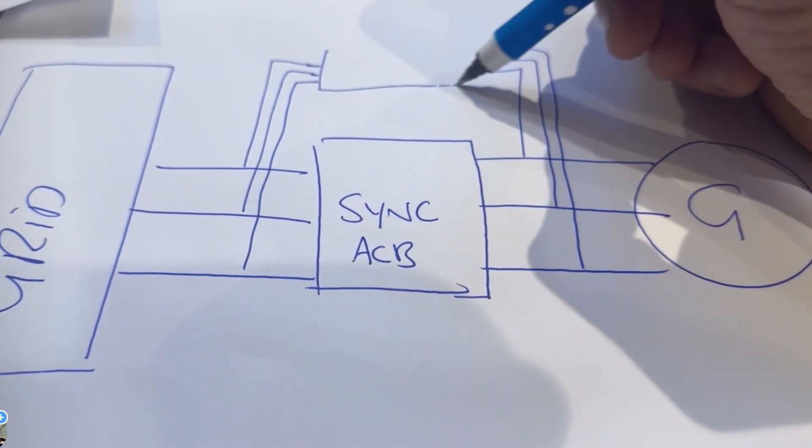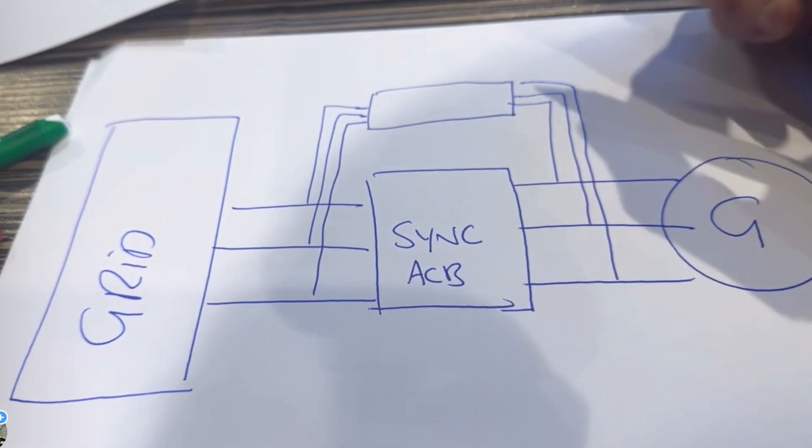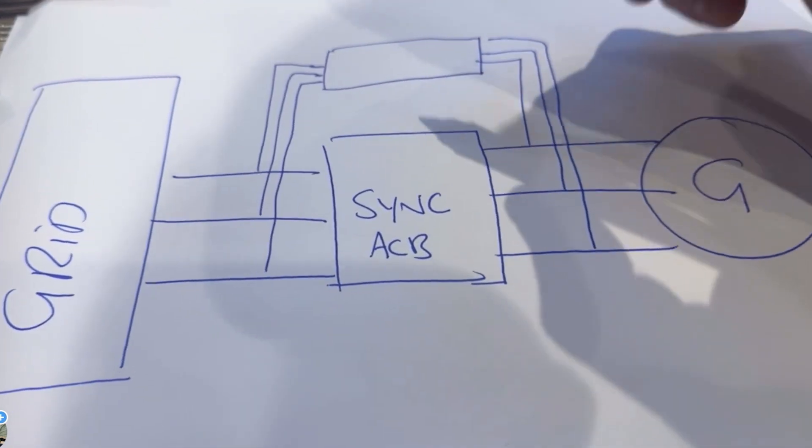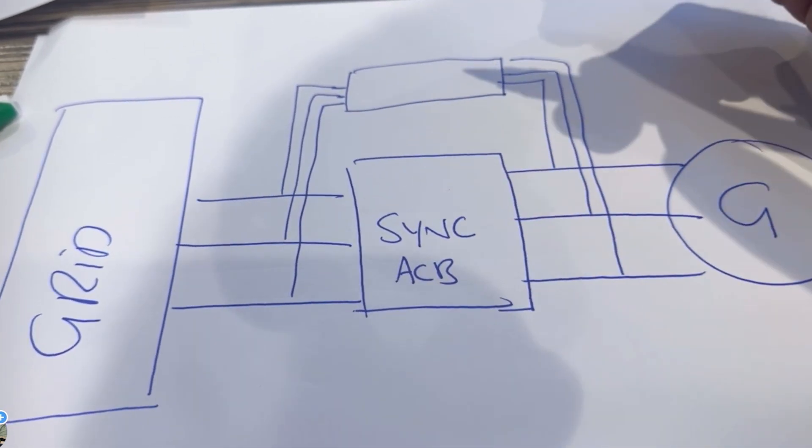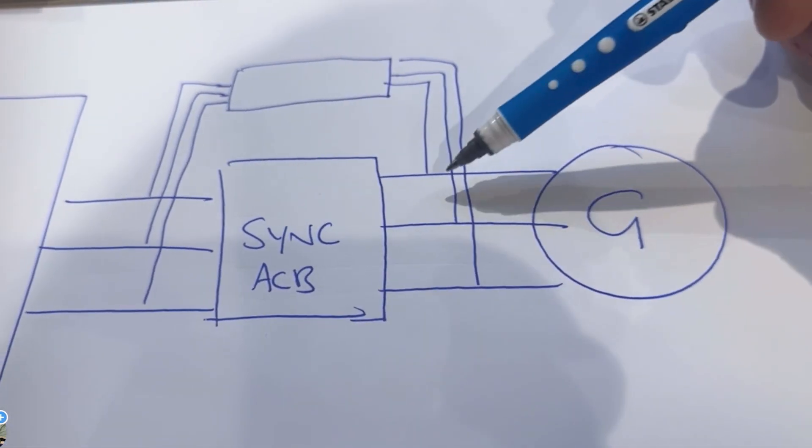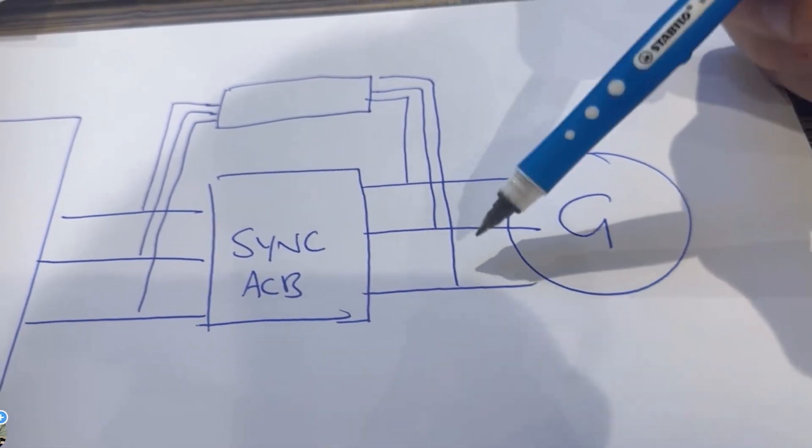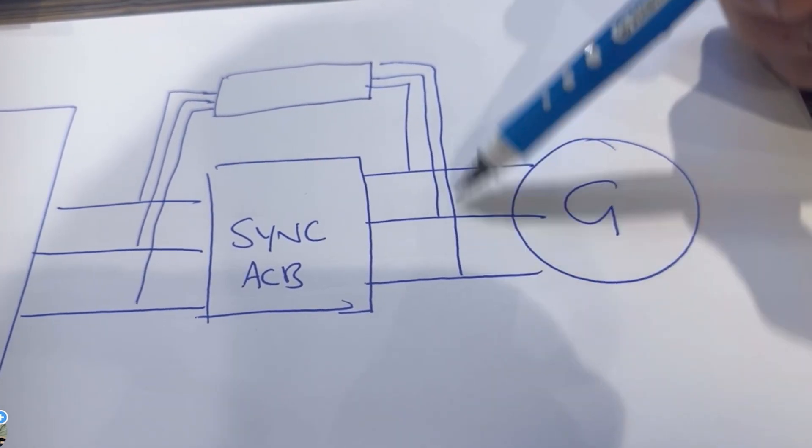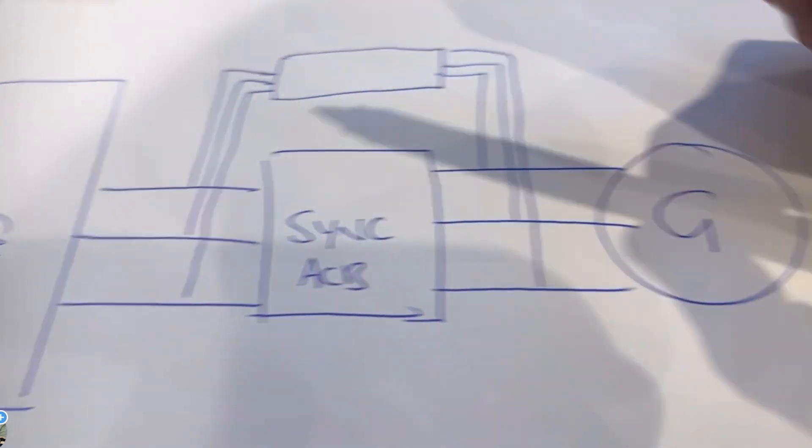Back in the good old days you'd have all sorts of mad shit, synchroscopes and all that bollocks. But now you get specialized controllers that just do the whole lot. Comap is one to Google, there's a firm called Deep Sea that make them. Just look at synchronization controllers, synchroscopes, generator cross and all that.